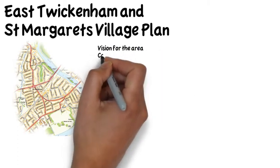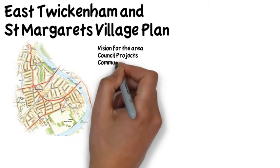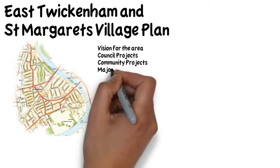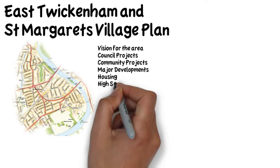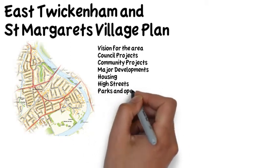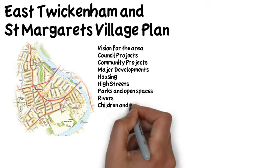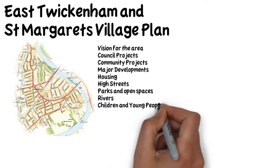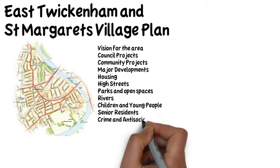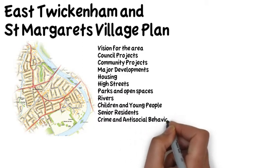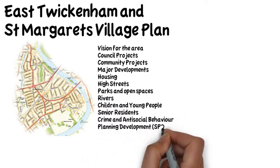These themes include the shared vision for the area, what projects the council is undertaking in the area, what major development projects there are, housing issues, high streets, the local economy, parks and open spaces, rivers, children and young people, senior residents, crime and antisocial behaviour, and planning related matters.